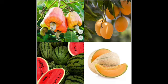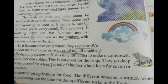In June — the month of June — summer season ends by the end of May and in the month of June, black clouds make their appearance — that is the rainy season. You get to see all these fruits in the market. Which fruits do we get in rainy season? We get jack fruits, jamuns, karwandas — these fruits we get during rainy season. The seeds of grass and other plants lie scattered all over the ground, and when the rainy season starts, they sprout and start growing as soon as it begins to rain.